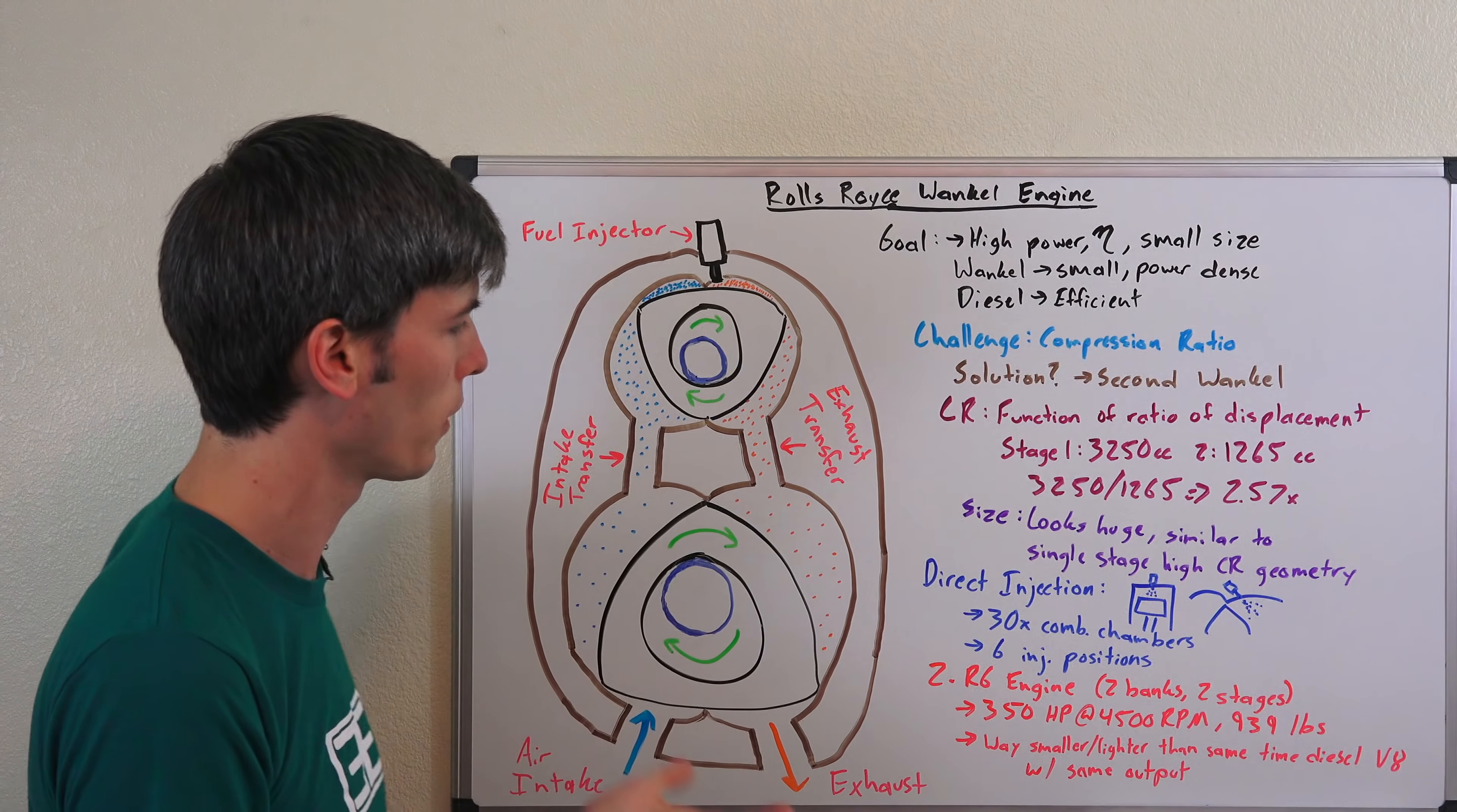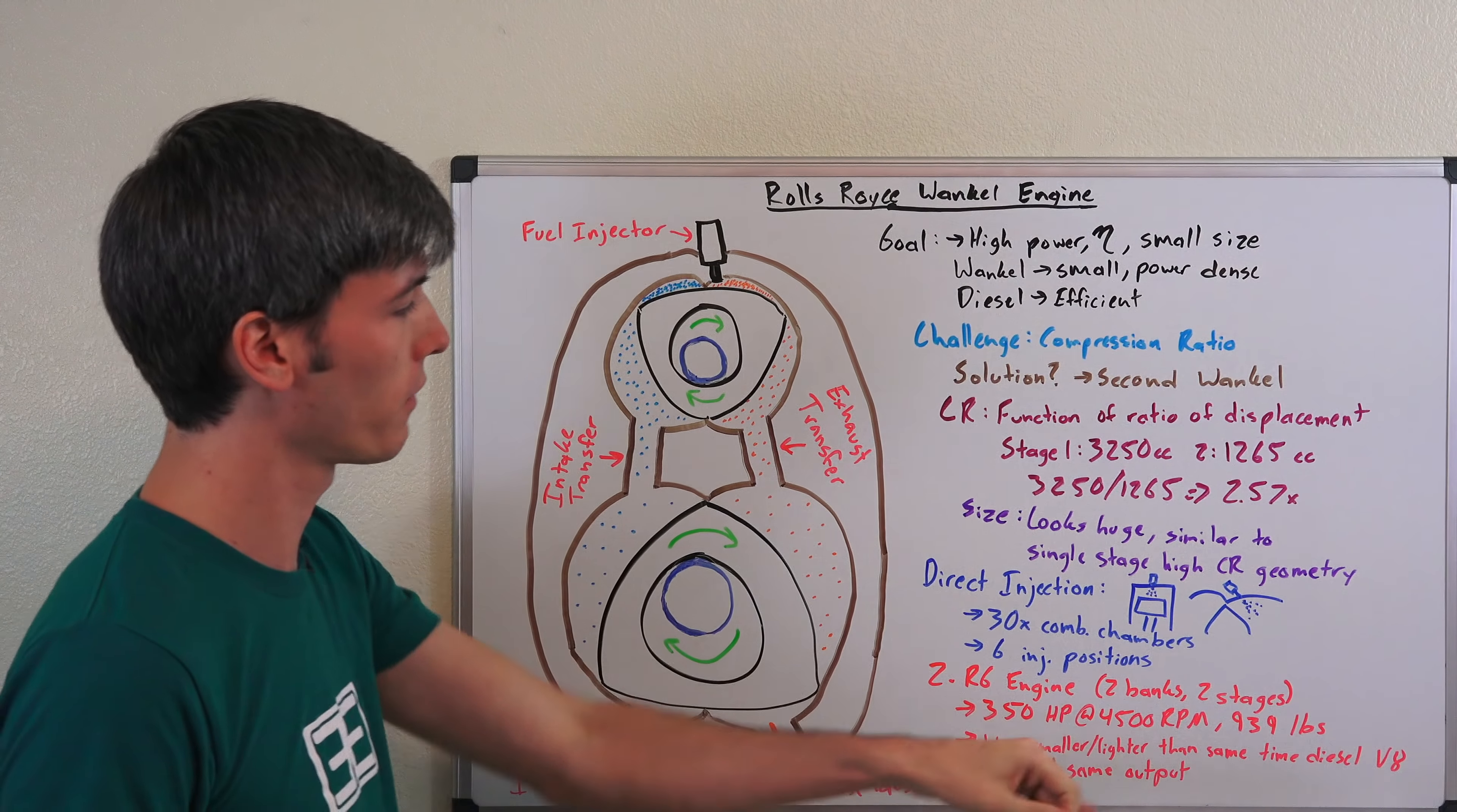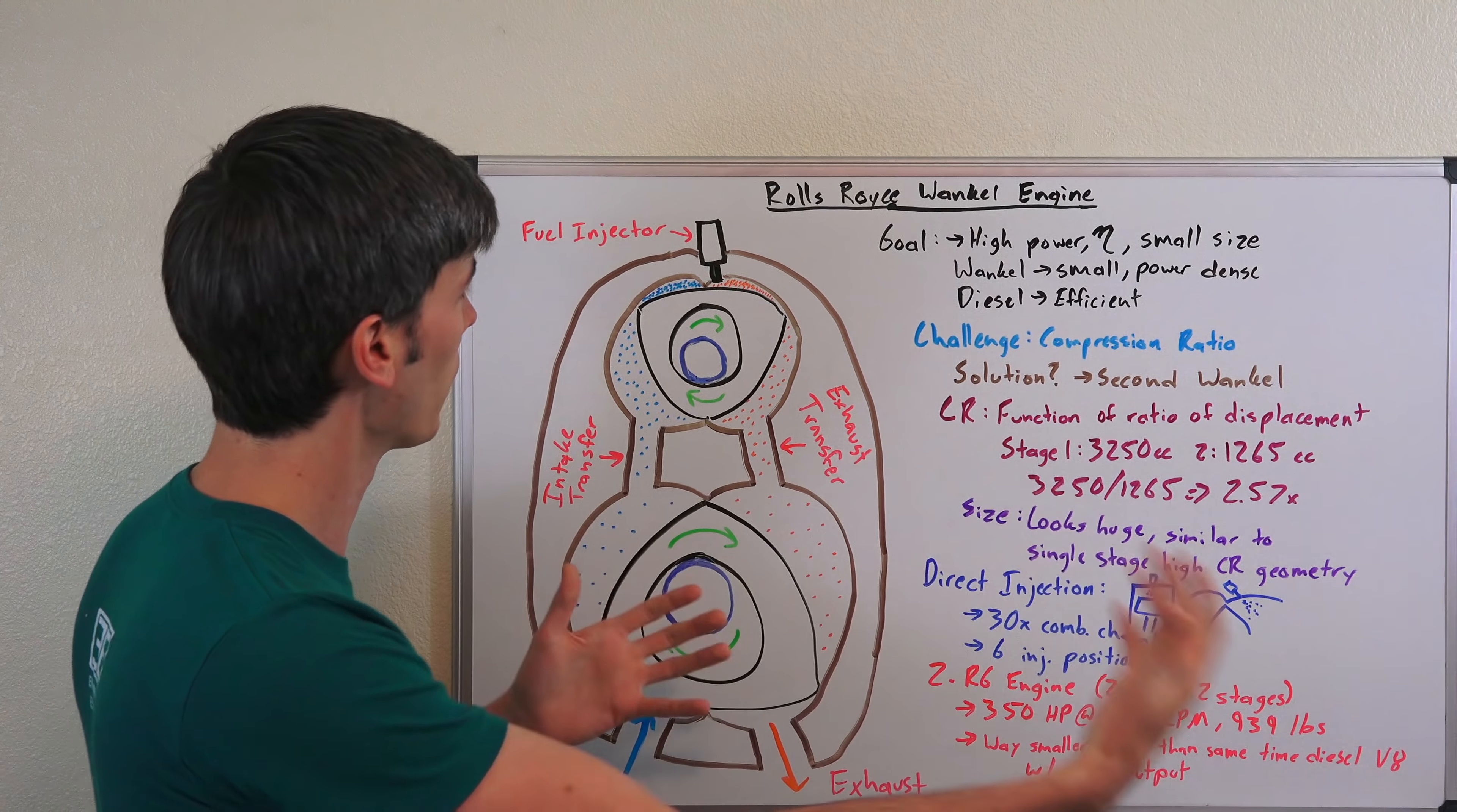The Rolls engine is the 2-R6 engine, and basically it was set up with two banks on two stages. So overall this was basically a four rotor engine. They were doing this back in the 1970s producing 350 horsepower at 4,500 rpm and only weighing 939 pounds. Now 939 certainly sounds like a lot, but remember this is a diesel engine and this is back in the 70s. At the time it was way smaller and way lighter than similar diesel V8s that had similar output. So the diesel V8s were much bigger, much more weight, similar output but of course that drawback of their size and weight.